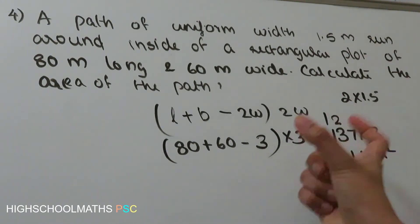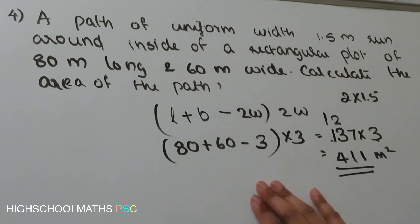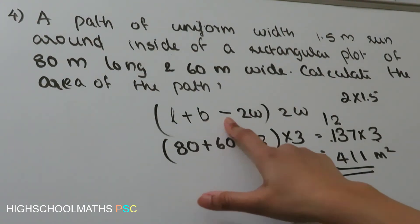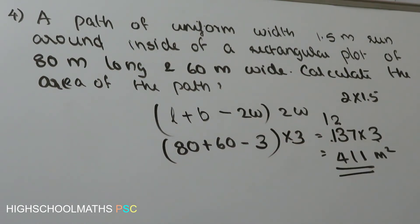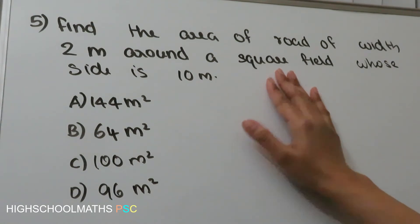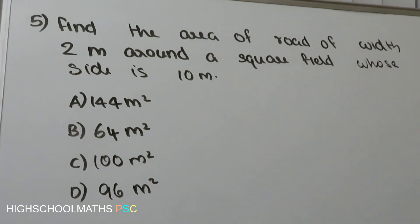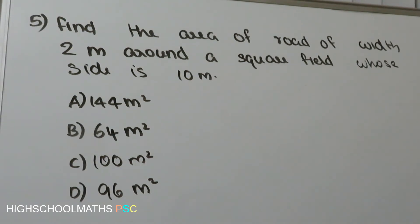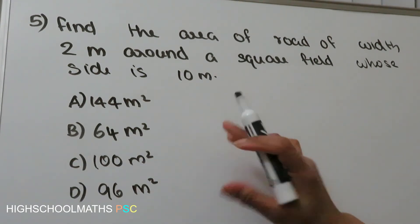We plot the rectangle inside the rectangle with uniform width. The equation is L plus B minus 2W, into 2W. Now find the area of a road of width 2m around a square field whose side is 10m. The options are 144, 64, 100, and 96.